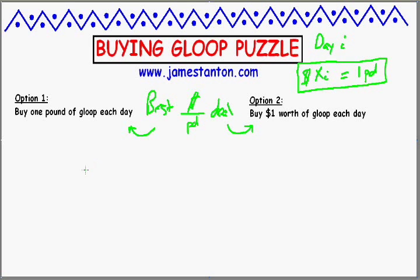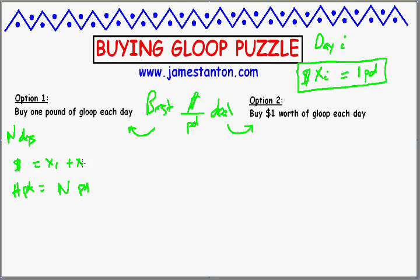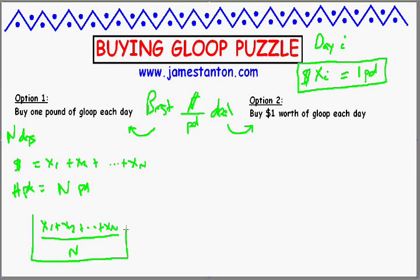Option number one: buy one pound of Gloop each day. Let's suppose I do this for N days. If I buy one pound of Gloop each day, the number of pounds I have is certainly N pounds. How much do I pay for it? On day one I'd pay X1 dollars, on day two X2 dollars, on day three X3 dollars, all the way up to XN dollars. So my cost per pound ratio is (X1 + X2 + ... + XN) dollars for N pounds of Gloop — that's my dollar-per-pound ratio following option one.